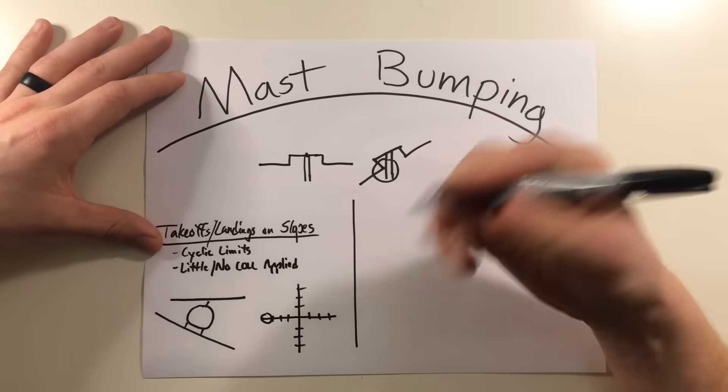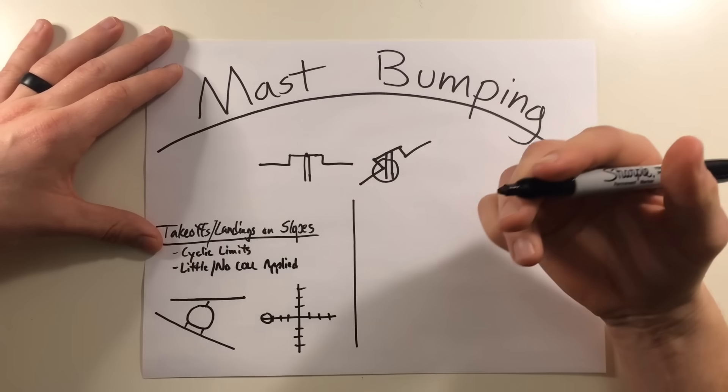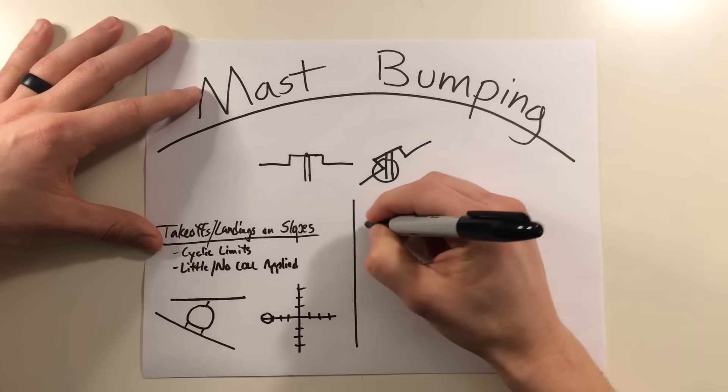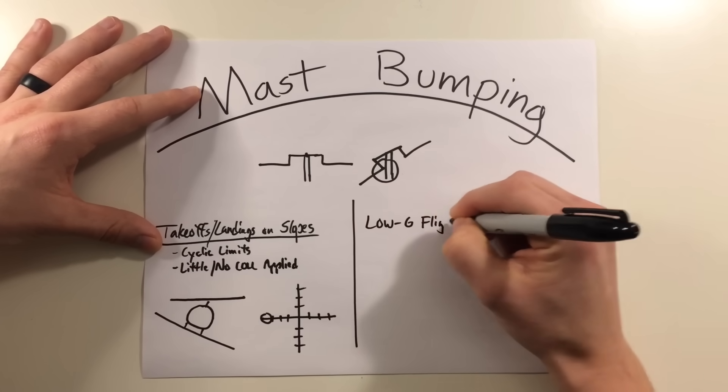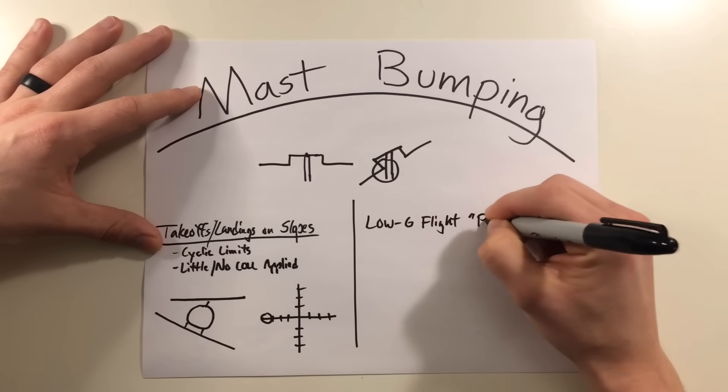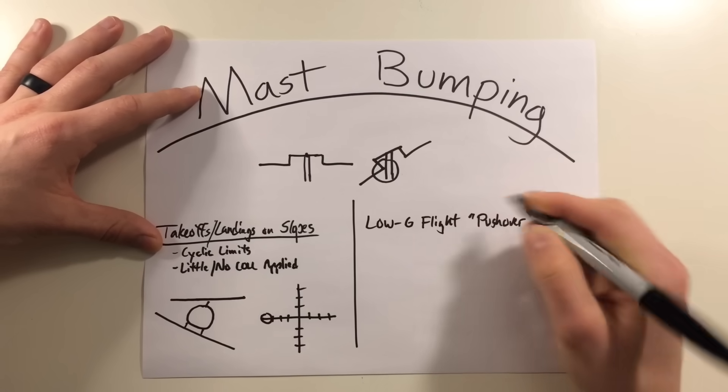So the next part of mast bumping is going to be far more severe and this is going to be your low G flight, typically associated with a pushover maneuver.